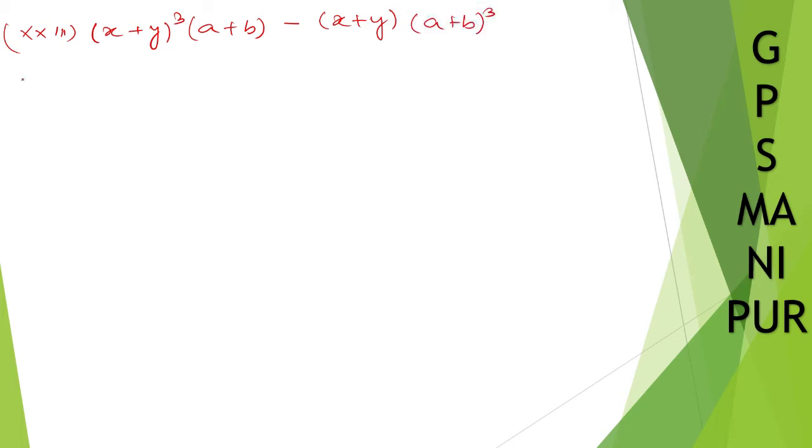The question seems quite long but it is simple. So what shall we do? Just take (a + b) and (x + y) common. So (a + b) and (x + y) common. (a + b) is taken out, (x + y) taken out. So (x + y), one is taken out.